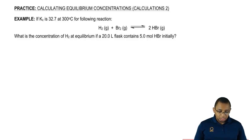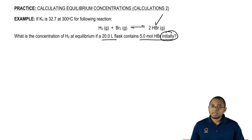It says, what is the concentration of H2 at equilibrium if a 20 liter flask contains five moles of HBr initially? Now, what we should say to ourselves is, do I have to do an ice chart or not? What we should realize here is, all I'm giving you is initially only this amount of product.